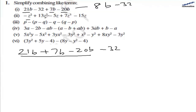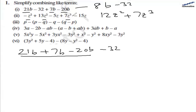For the second one, the like terms are z square and z square together. So that will become 13 minus 1, that is 12z square. And then we have 1 z cube plus 7 z cube. And we have two terms containing z: minus 15 and minus 5, that is minus 20z.